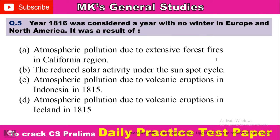Last question: Year 1816 was considered a year with no winter in Europe and North America. It was a result of — Option A: Atmospheric pollution due to extensive forest fire in the California region. Option B: The reduced solar activity under the sunspot cycle. Option C: Atmospheric pollution due to volcanic eruption in Indonesia in 1815. And Option D: Atmospheric pollution due to volcanic eruption in Iceland in 1815. So comment your answer here.